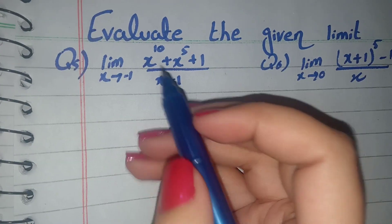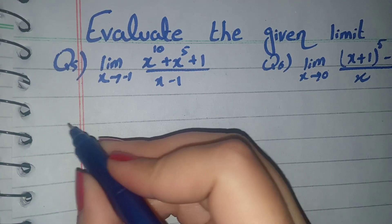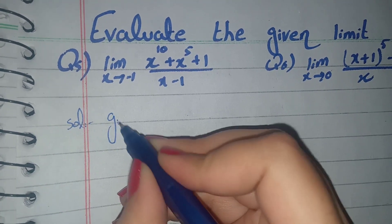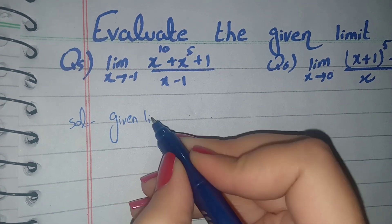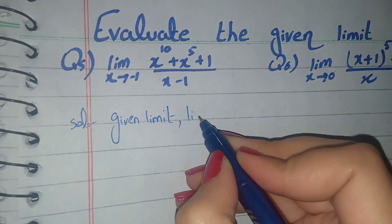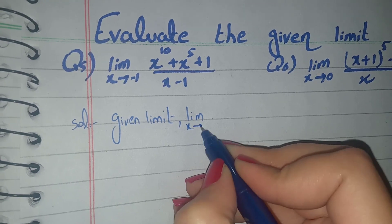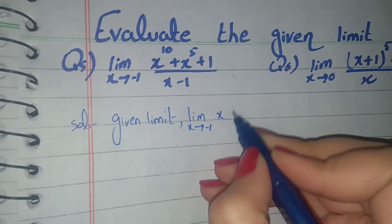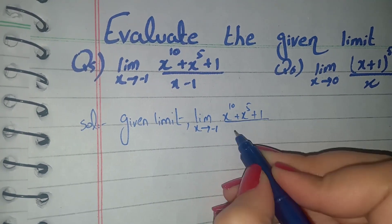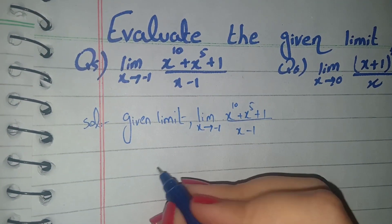First of all, we have to write the given limit. What is given? The limit is x approaches to negative 1. Here we have x^10 plus x^5 plus 1 divided by x minus 1. What will we do?